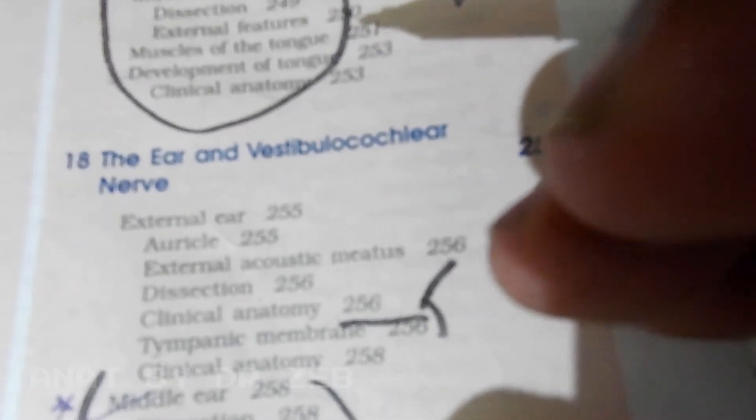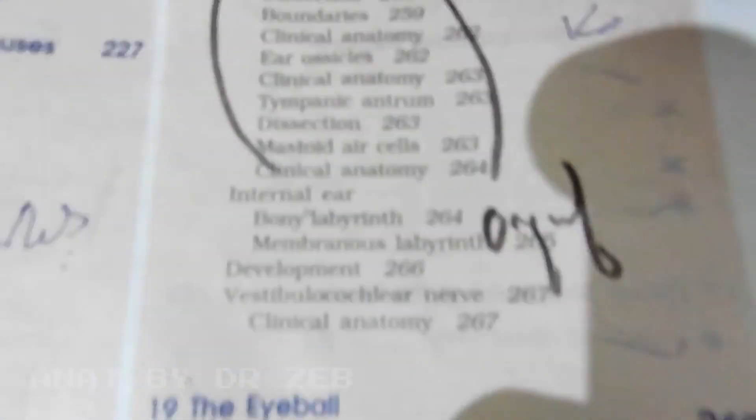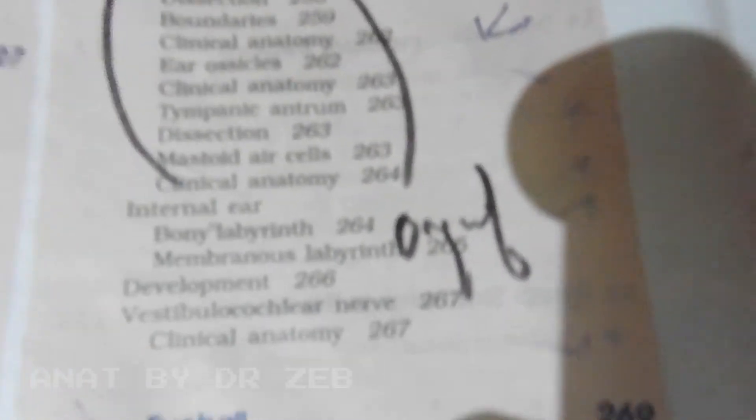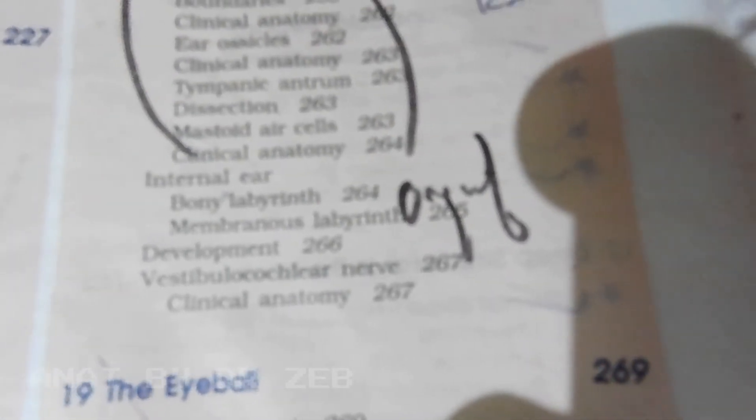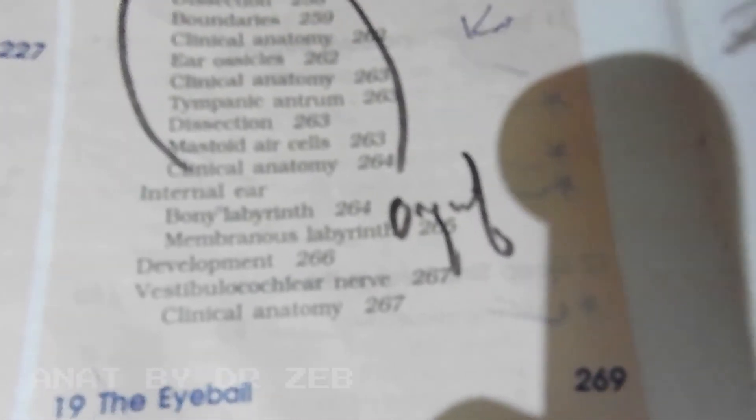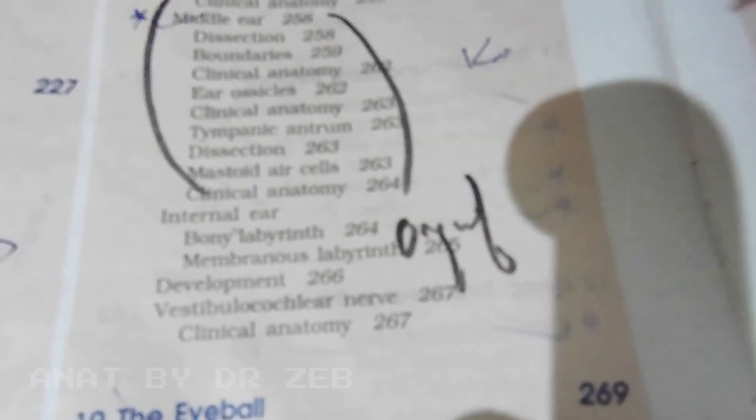Middle ear only for you. The syllabus gives only middle ear, contents of middle ear, not the boundaries of middle ear, and the entire parts of the middle ear and a note on internal ear.